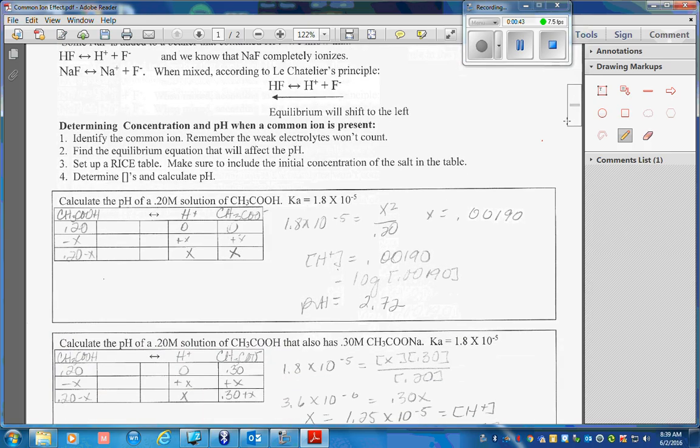Let's determine the concentration and pH when a common ion is present. Identify the common ion. Remember that weak electrolytes don't count. Find the equilibrium expression that will affect pH. Set up a RICE table. Make sure to include the initial concentration of the common ion in the table. Determine concentrations and calculate pH.